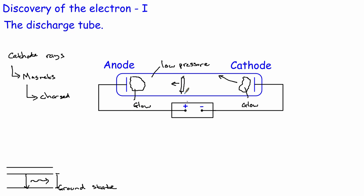So the main points are: the gas glows; when you put a paddle wheel in, it moved from the cathode towards the anode, showing that cathode rays move in that direction; and if you put a magnet near these things, it affected the cathode rays, which meant that cathode rays were charged.